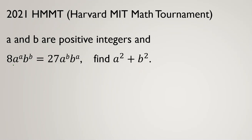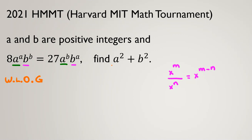I have a here and a here, so I should divide. I have b here and b here, so I should divide by b to the power of the smallest one. I'll use the power rule: x to the m over x to the n equals x to the power of m minus n. Now I want to see whether a or b is greater. Without loss of generality, and because a and b are symmetric, I consider a is at least b.